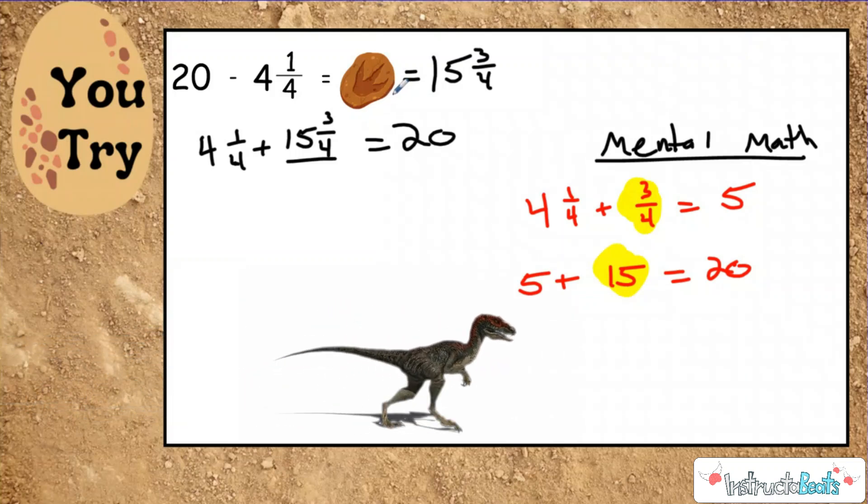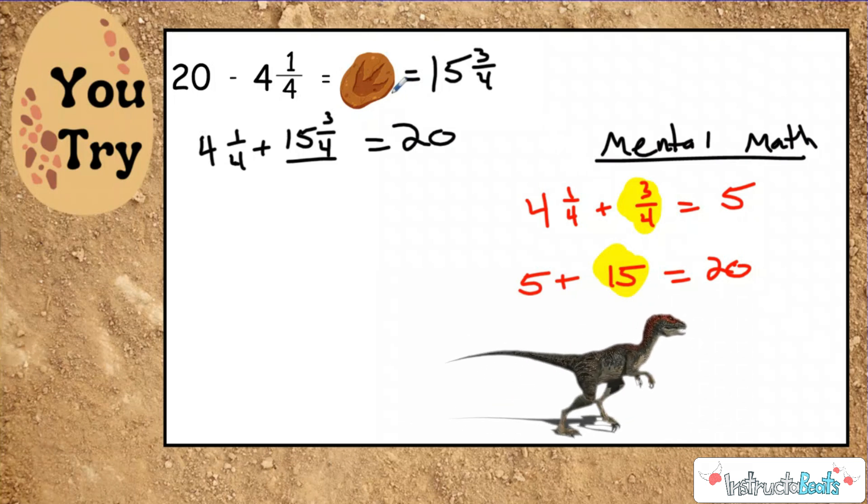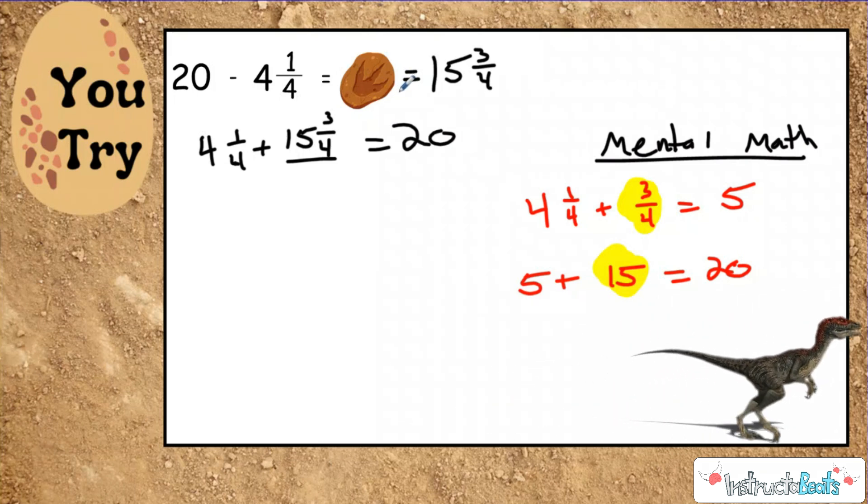Do not try to feed the velociraptors at Jurassic Park. You may get your hand or head bitten off. All right. So, again, you could get this by subtracting, but we also want to be able to count up because for a problem like this with a whole number and a mixed number or even a fraction, it's a lot easier and faster to count up, we believe. But either way, you'll have the tool in your paleontologist toolbox.